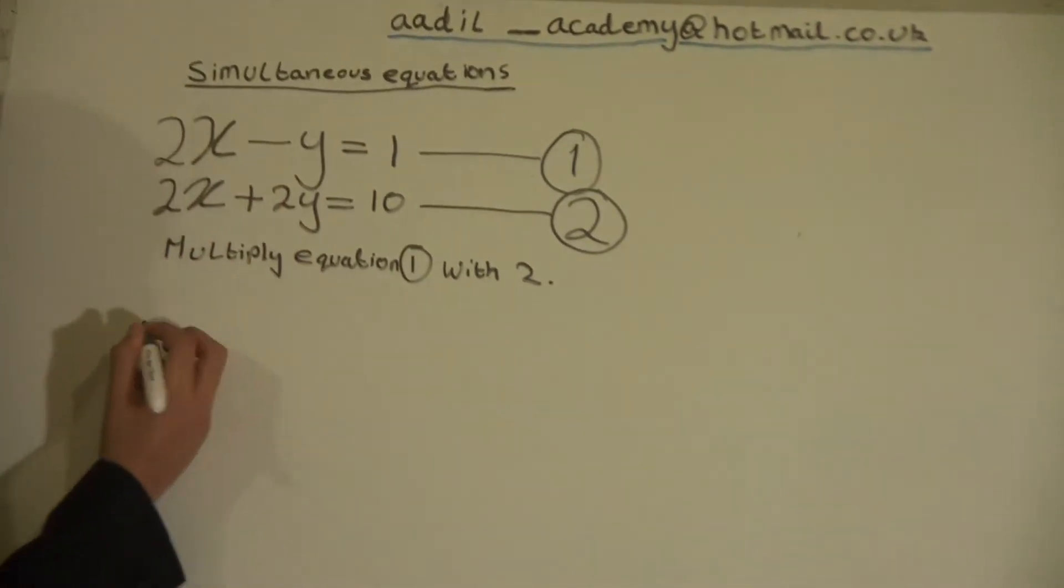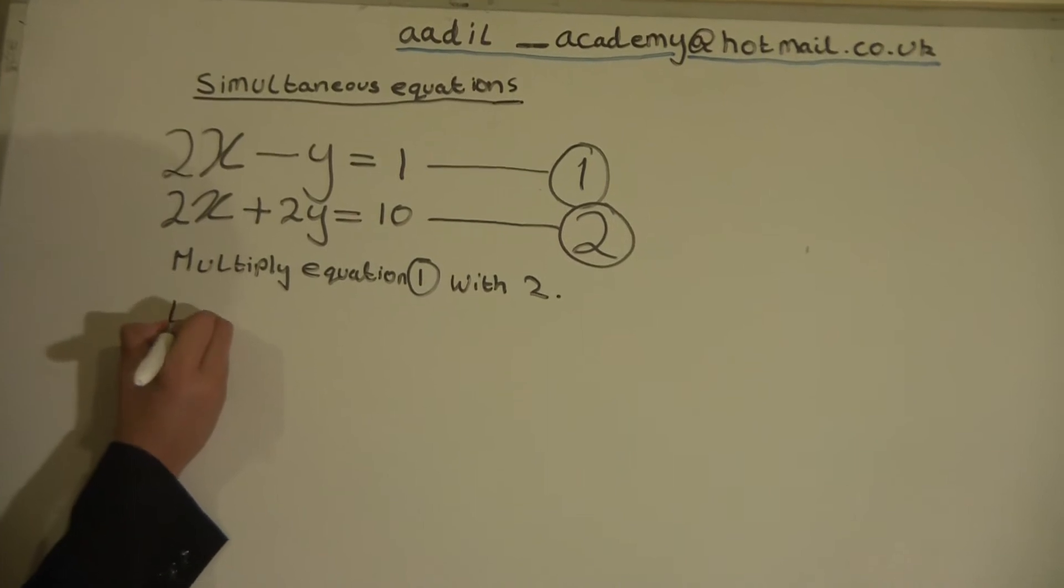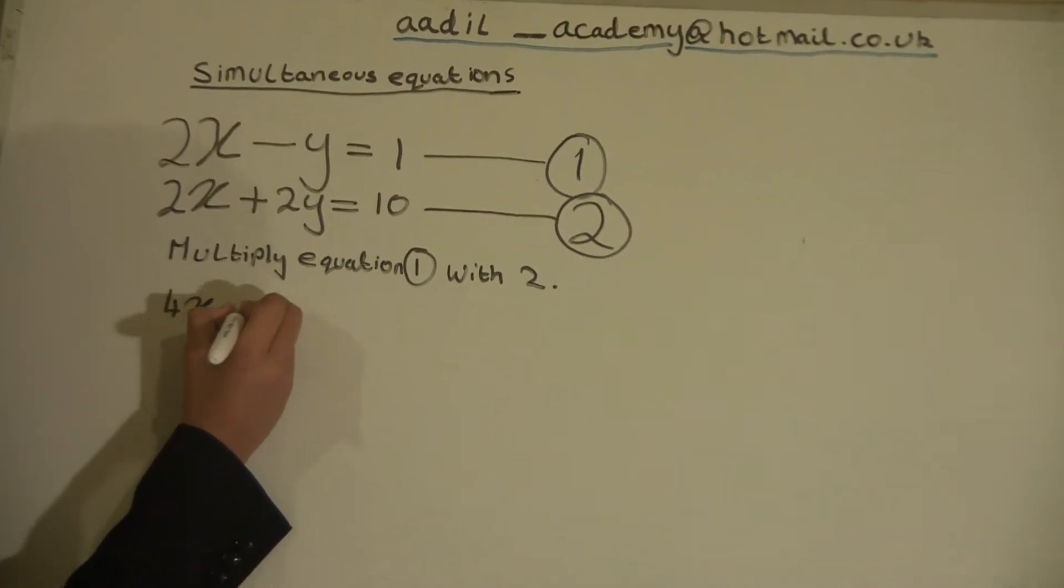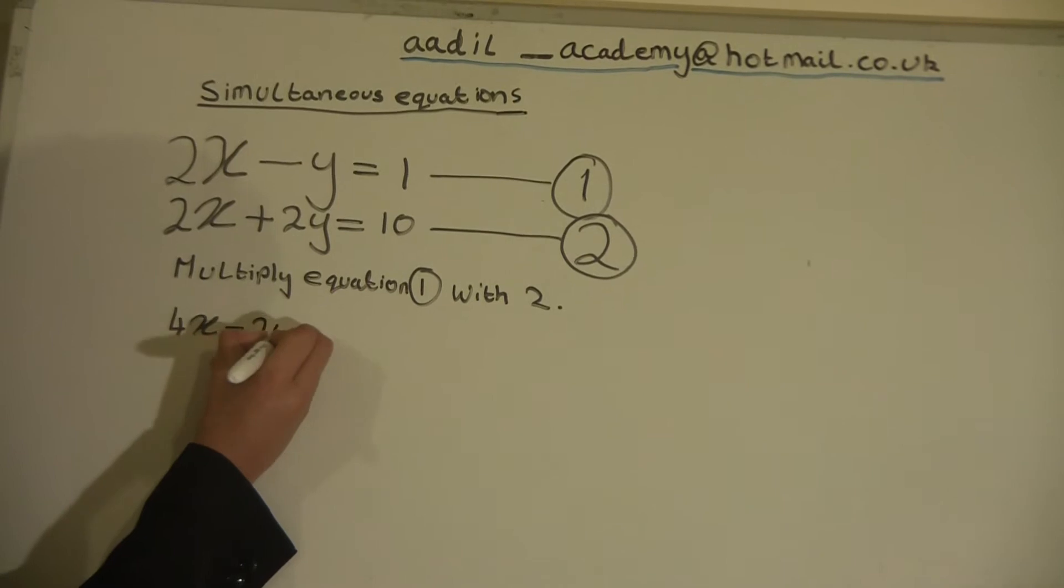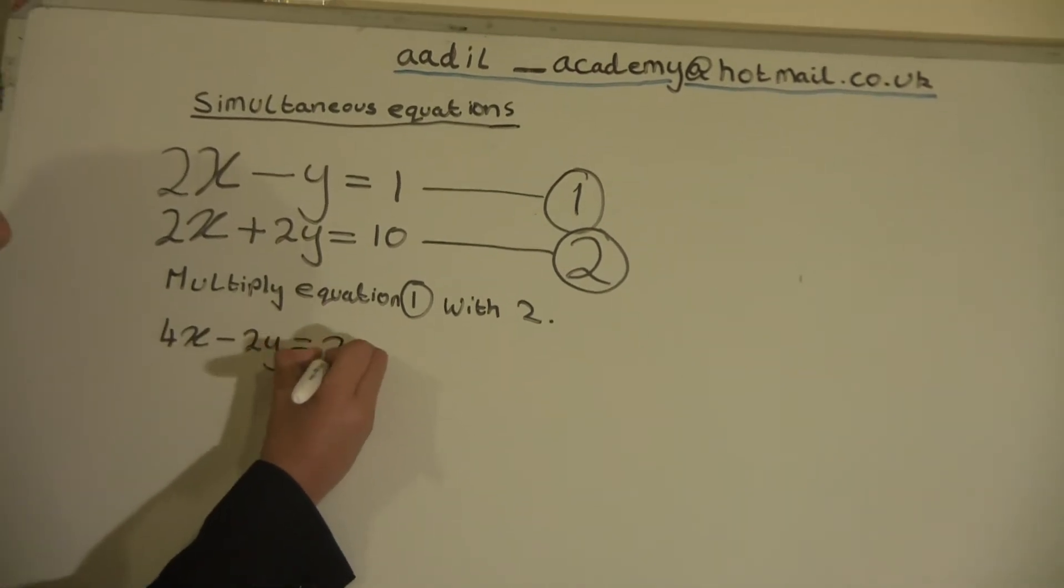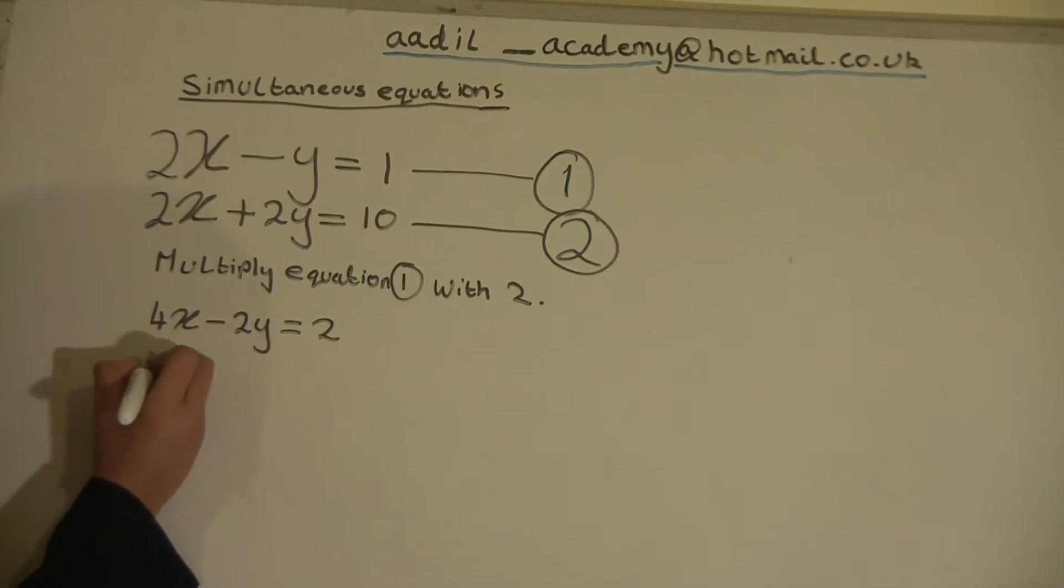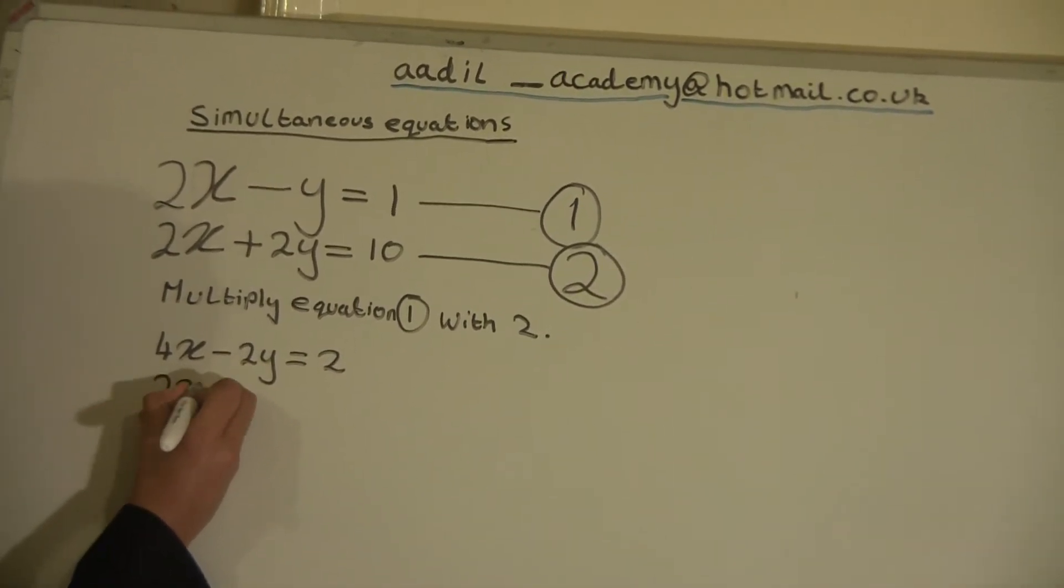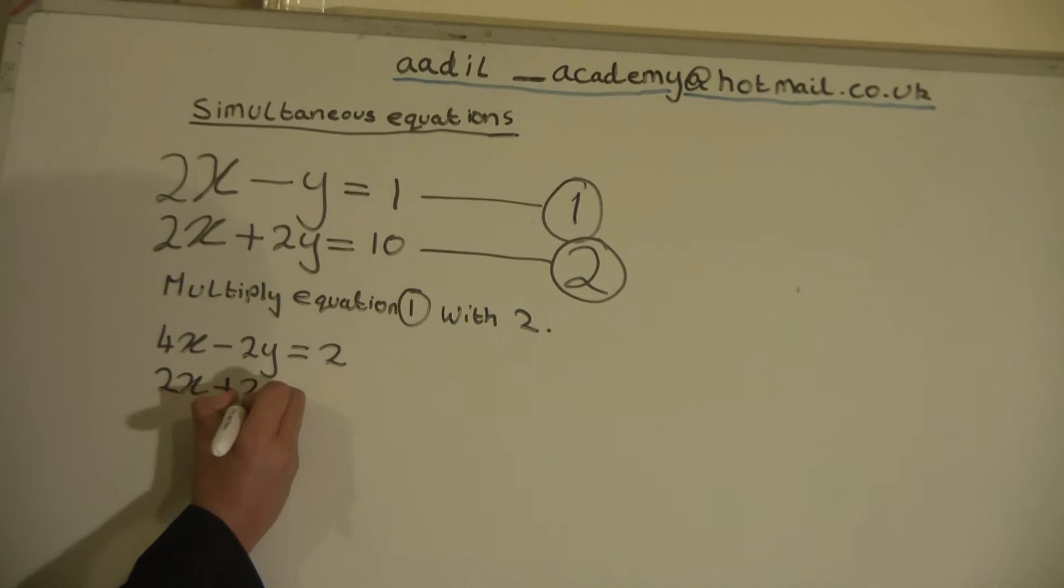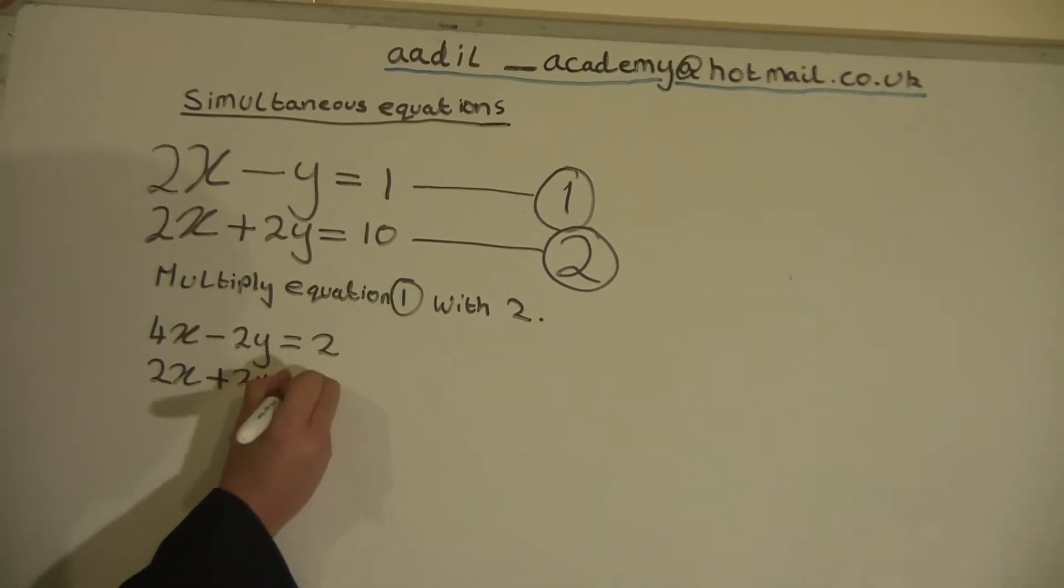And when we do the sum, the answer will be 4x minus 2y equals 2. And the bottom one will stay the same. So we will write it the same. 2x plus 2y equals 10.